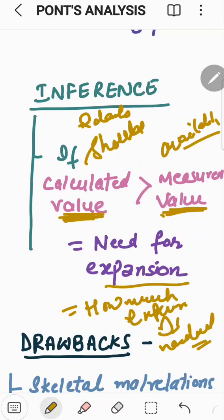Depending upon that, we can easily calculate that how much is the discrepancy from the calculated and the measured value and how much it means. If calculated is more than the measured, it means there is some need for the arch expansion. And from the difference in the values will describe us how much expansion is needed transversely.